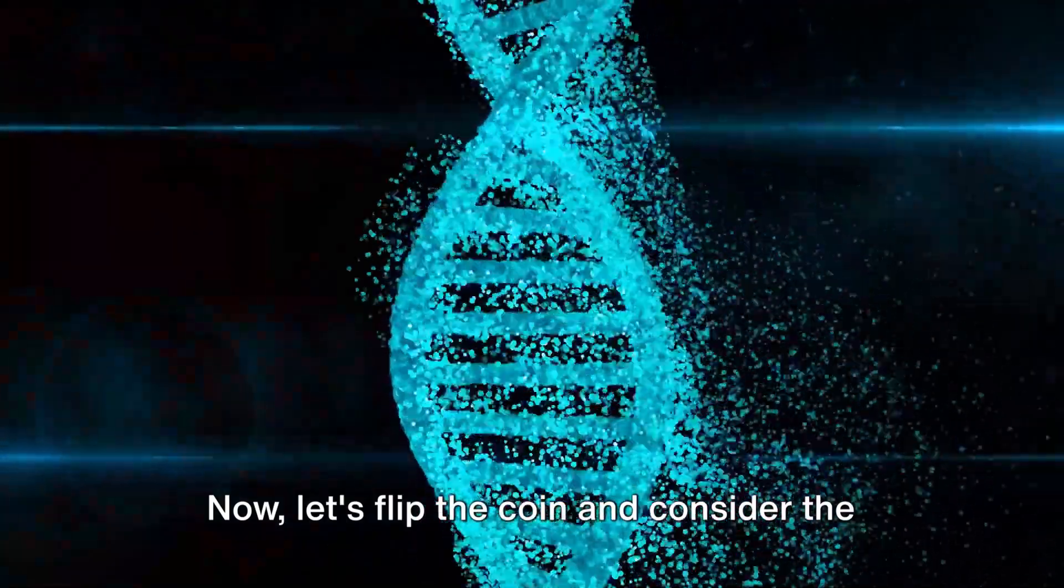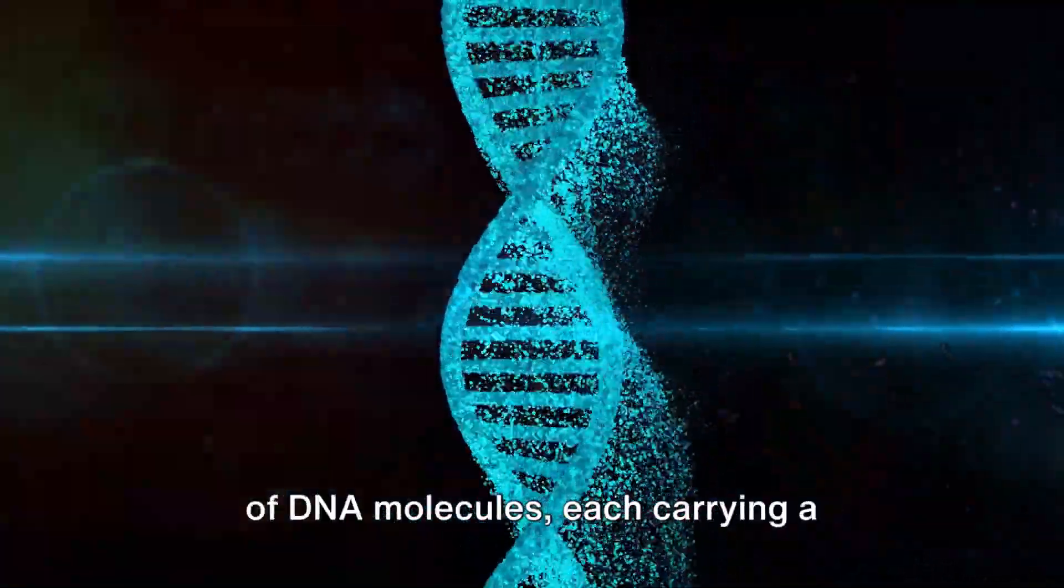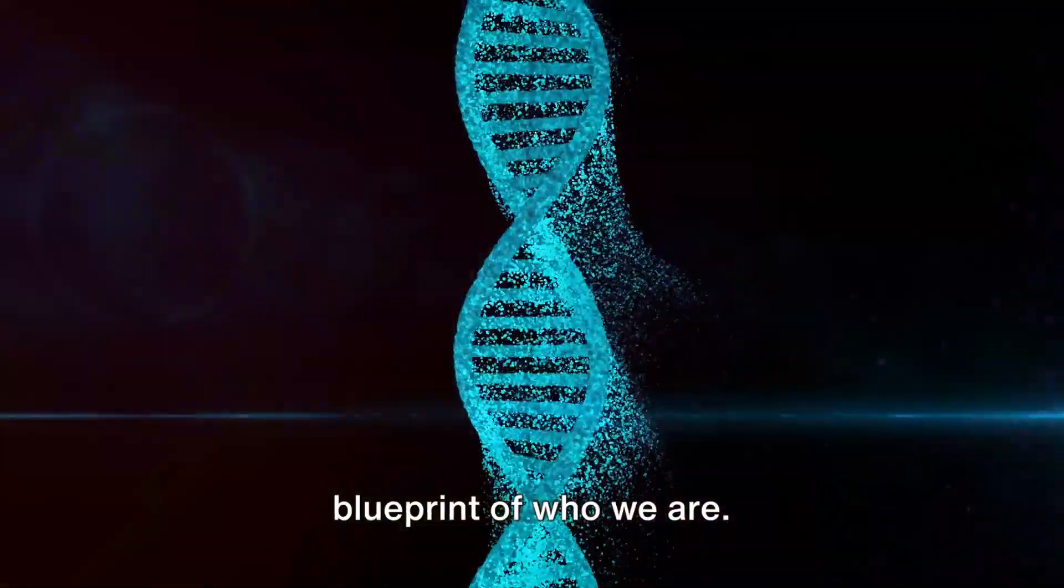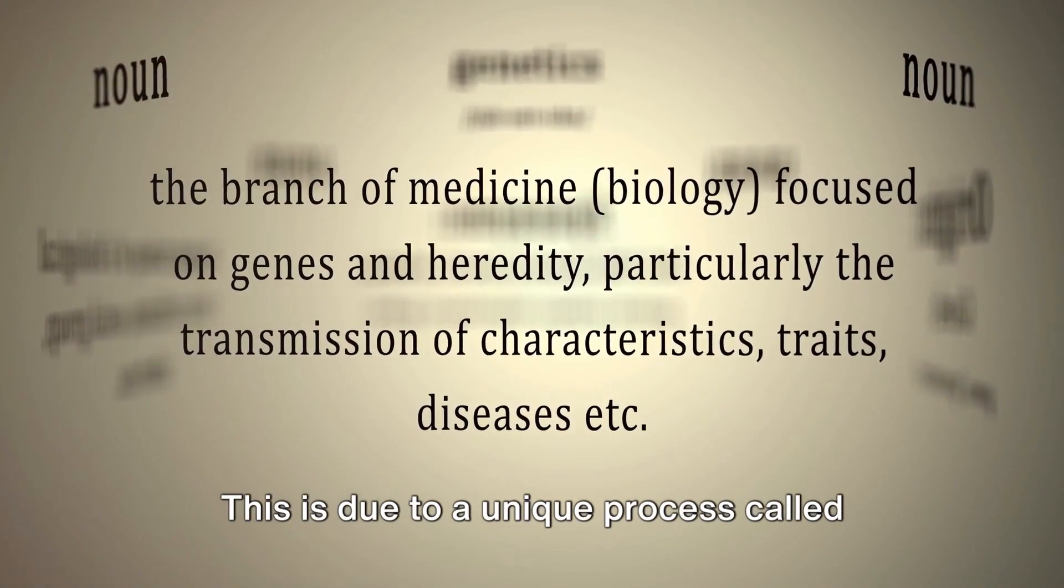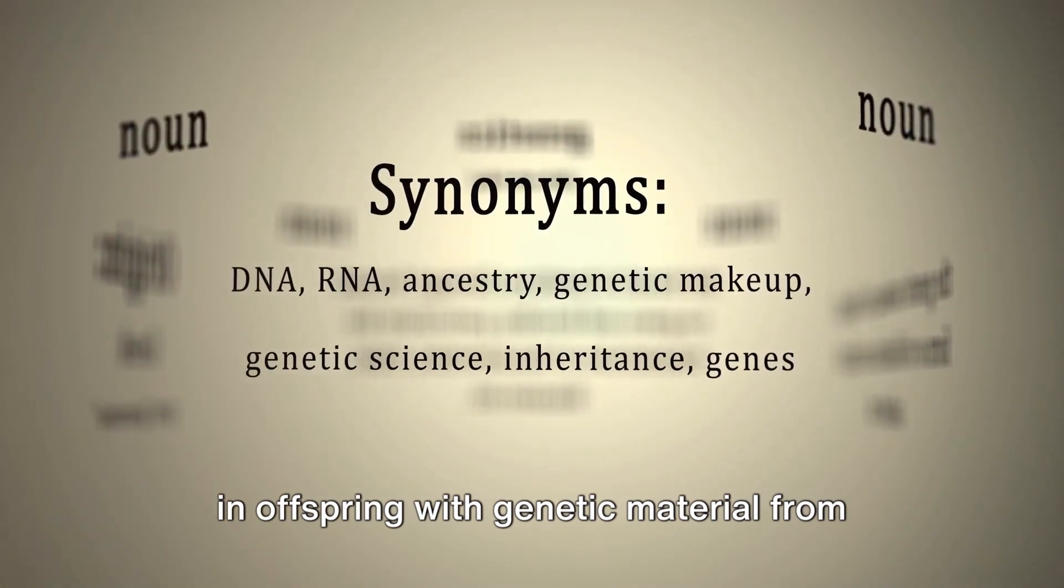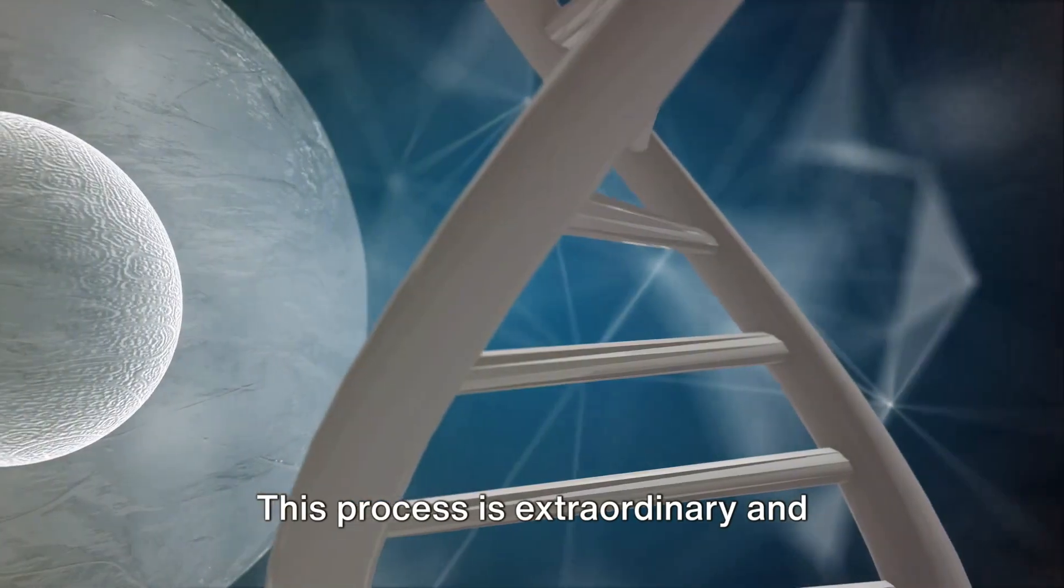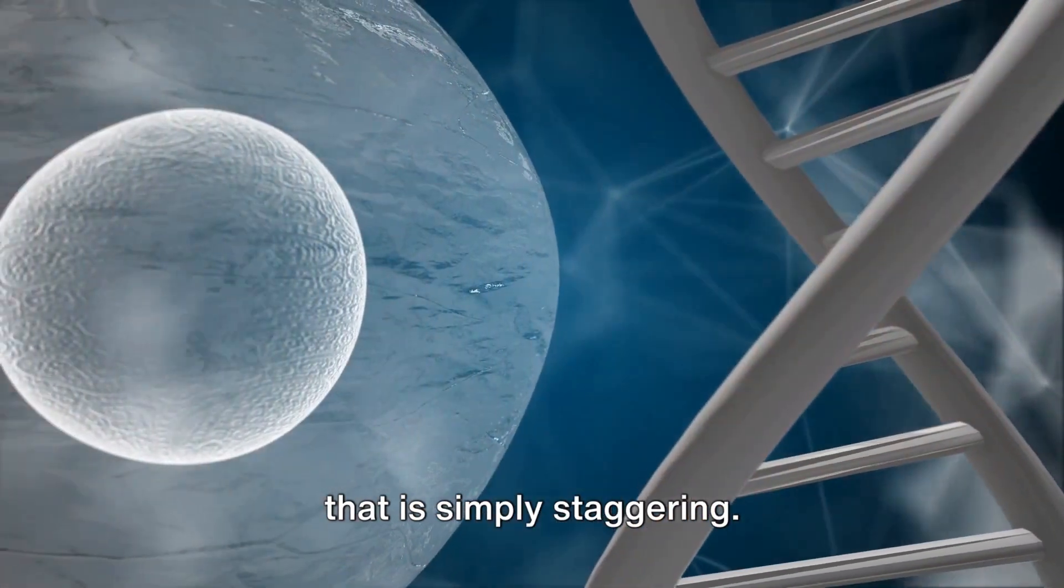Now let's flip the coin and consider the human body. It's no less of a marvel, having billions of DNA molecules, each carrying a blueprint of who we are. While computers are made, humans are born. This is due to a unique process called sexual reproduction, a method that results in offspring with genetic material from both parents. This process is extraordinary and intricate, leading to a diversity of life that is simply staggering.